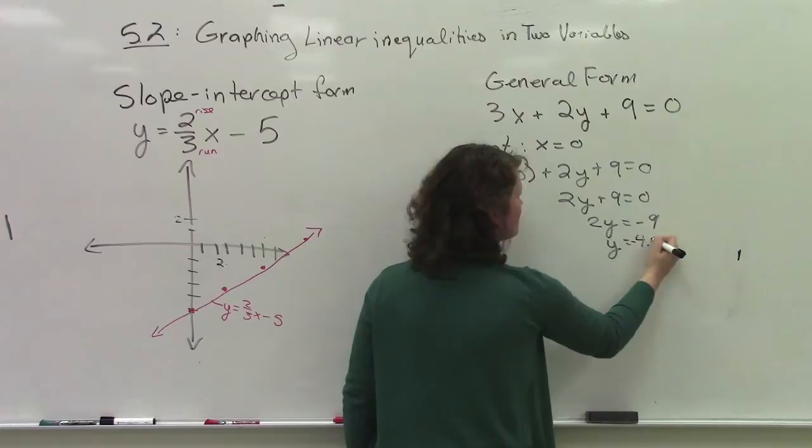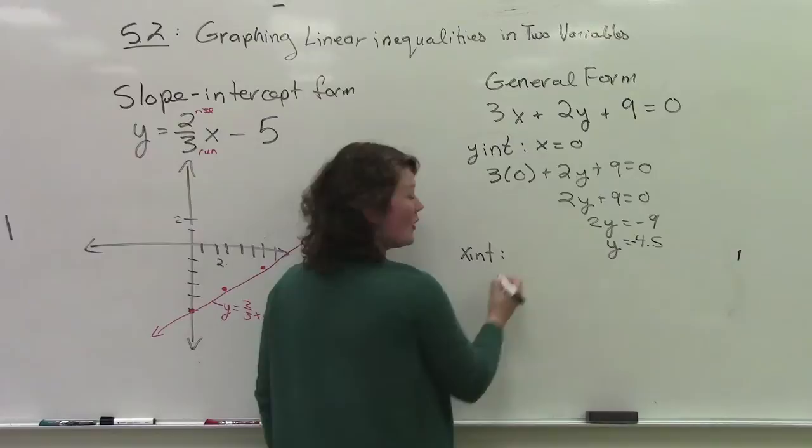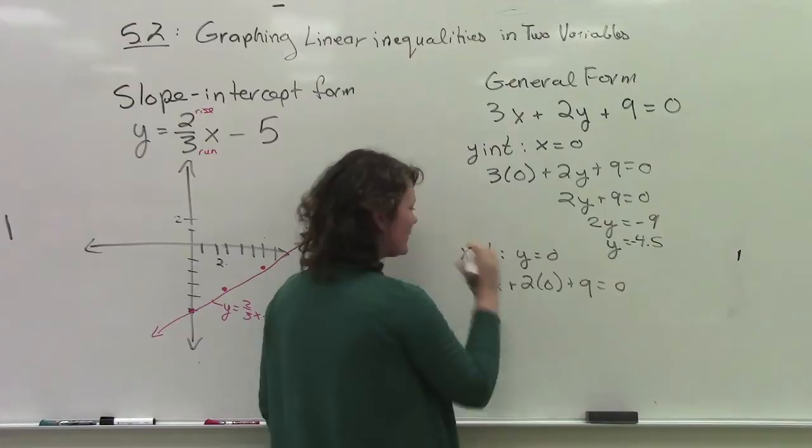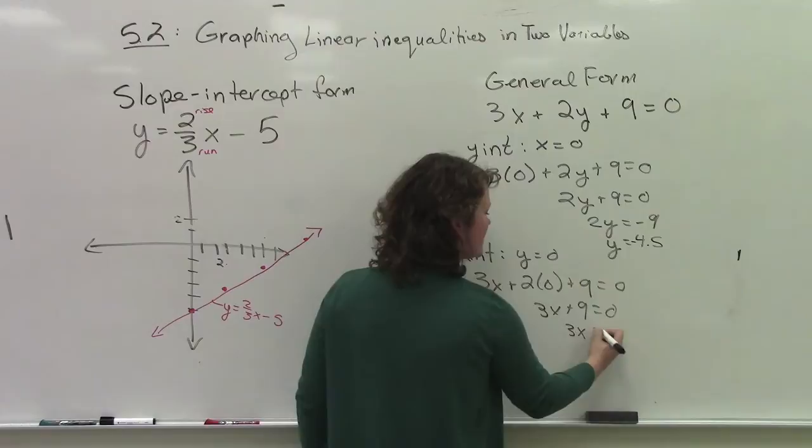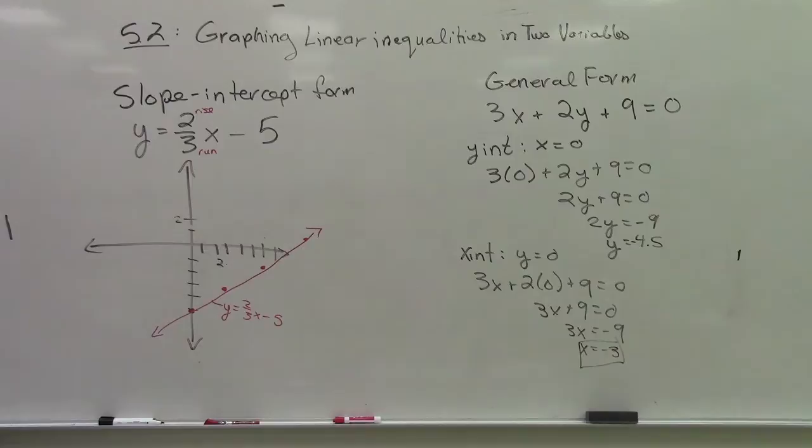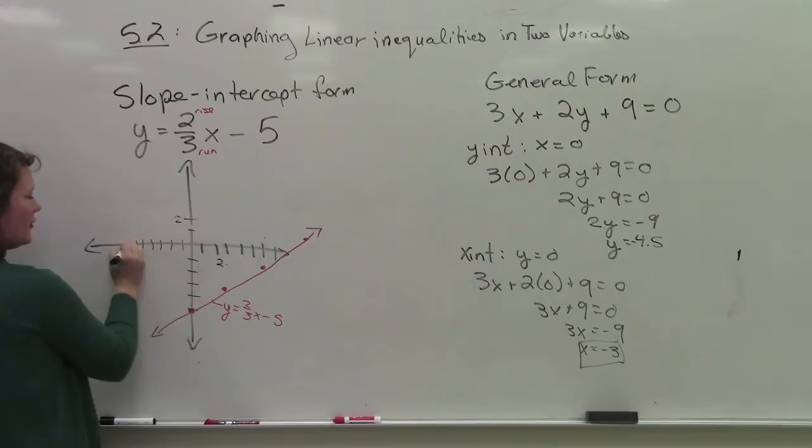We do the exact same thing with our x intercept. So x intercept, y equals 0. So we say 3x plus 2 times 0 plus 9 equals 0. 3x plus 9 equals 0. 3x equals negative 9. x equals negative 3. So then if I were to graph this thing, and I'm going to just use this guy right here, add a few tick marks.